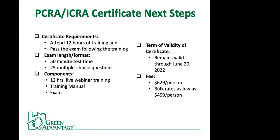Here are the certificate requirements. You must attend 12 hours of training and pass the exam that follows. The exam is 50 minutes long and consists of 25 multiple-choice questions. Thanks to GreenPath moving quickly from live training to live webinar training, the 12 hours are now available through live webinar. GreenPath provides a training manual, and then the exam is administered after that. The certificate is valid through June 2022, and fees range from $629 per person down to bulk rates as low as $499 per person, which covers the training, training manual, and exam.